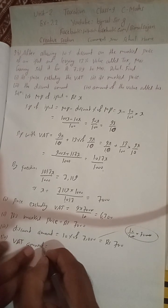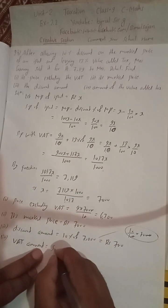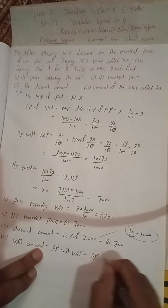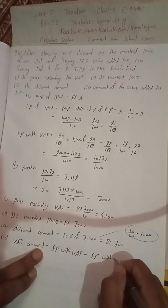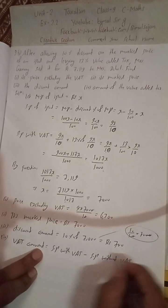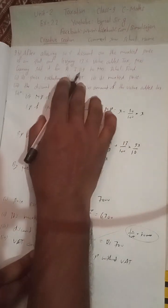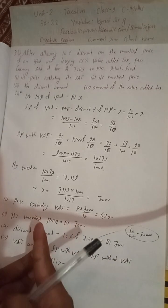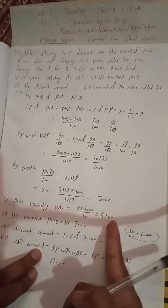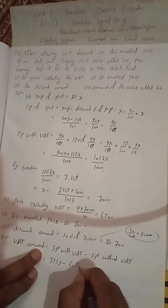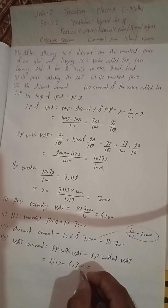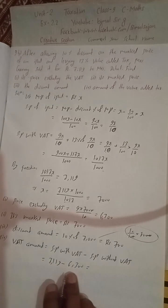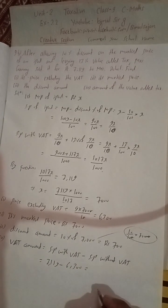SP with VAT is given as 7119 minus SP without VAT, which is 6300. When you calculate 7119 minus 6300, you will get Rs. 819.